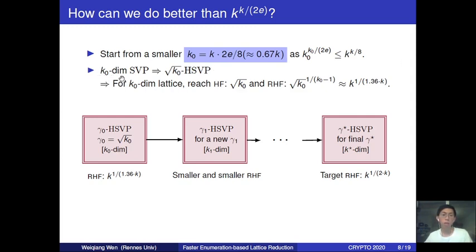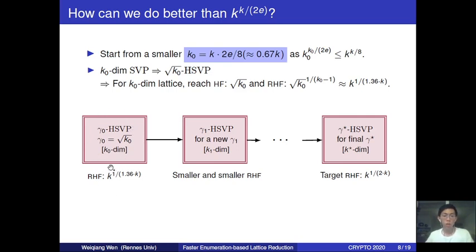By Minkowski's upper bound, a k0-dimensional SVP solver implies an approximate Hermit SVP solver of the same size with approximation factor square root k0. This implies that for a k0-dimensional lattice we can already reach a Hermit factor square root k0, and together with the relation between k0 and k, we derive a starting root Hermit factor of k^{1/(1.36k)}. This is much larger than our target root Hermit factor. With this starting approximate Hermit SVP solver, reaching this starting root Hermit factor in time k^{k/8}, we aim to construct from it a new approximate Hermit SVP solver over a new dimension with a smaller root Hermit factor, still in time k^{k/8}. Repeating this process sufficiently many times until we reach the target root Hermit factor is the general idea of our new algorithm.